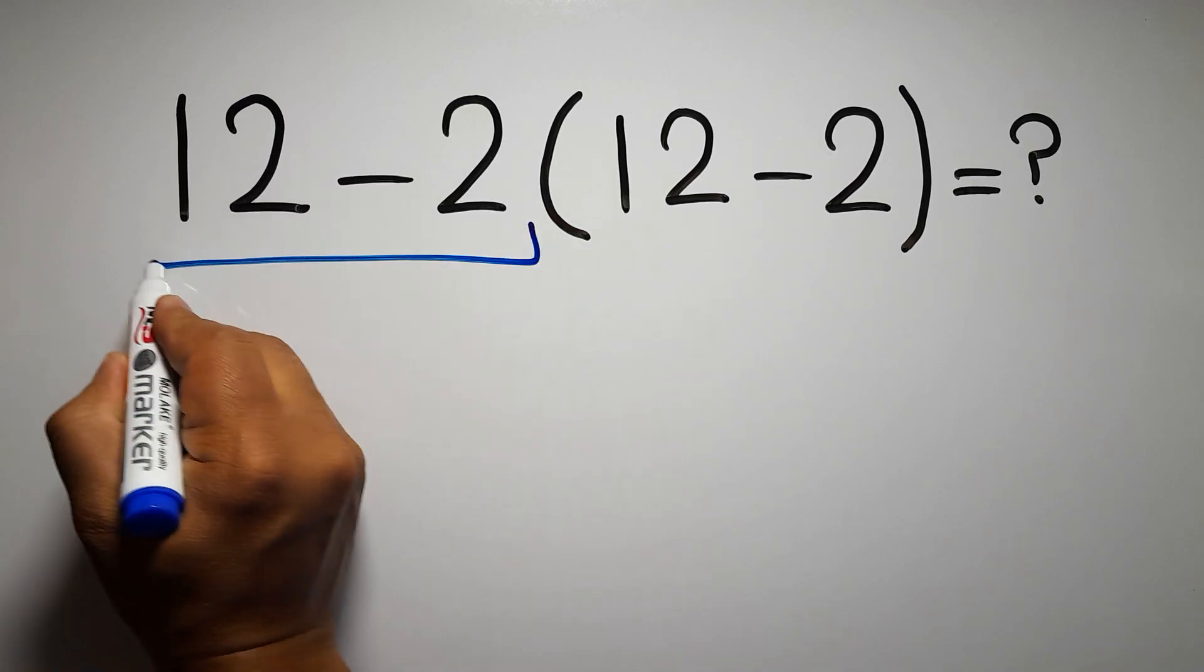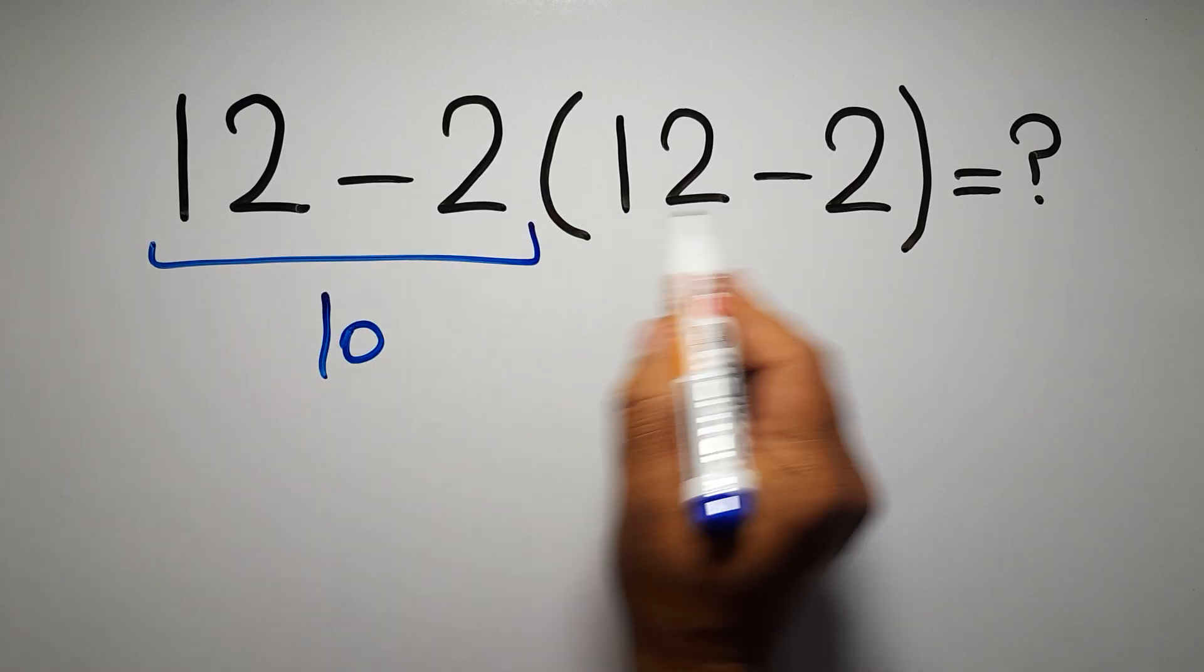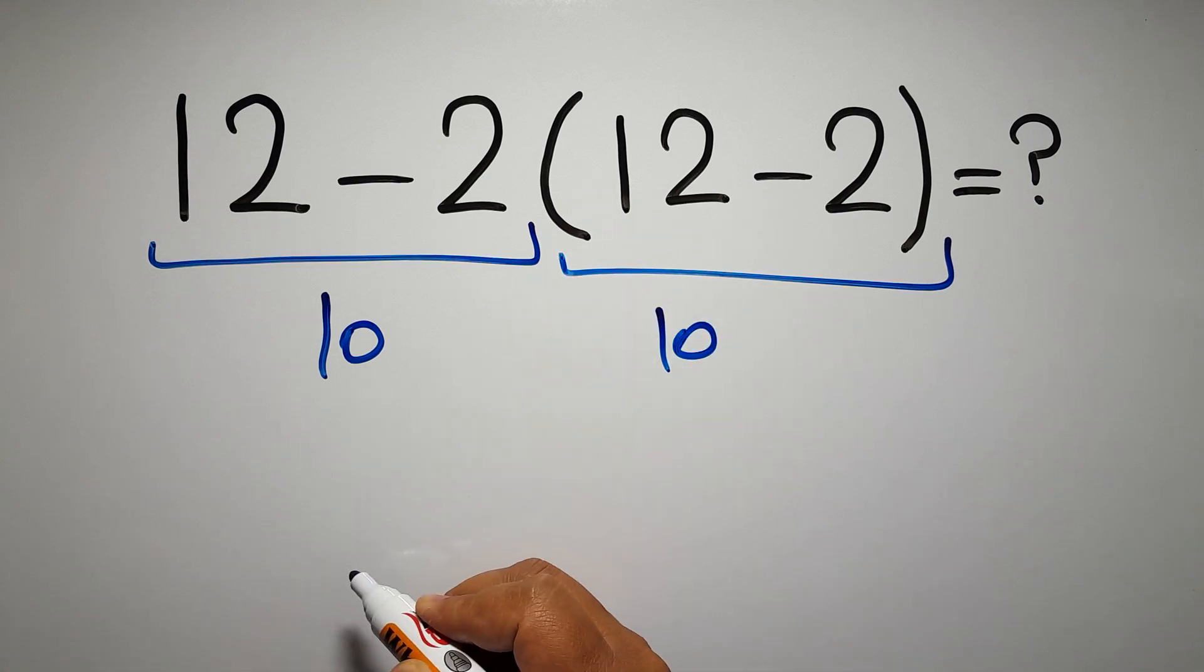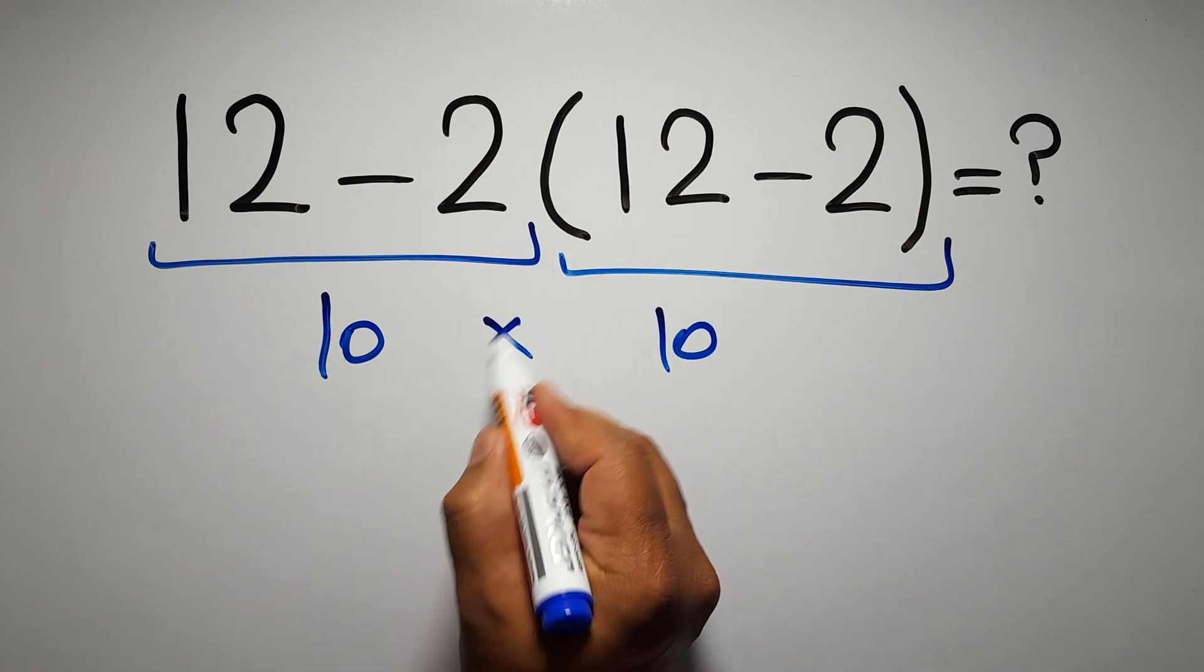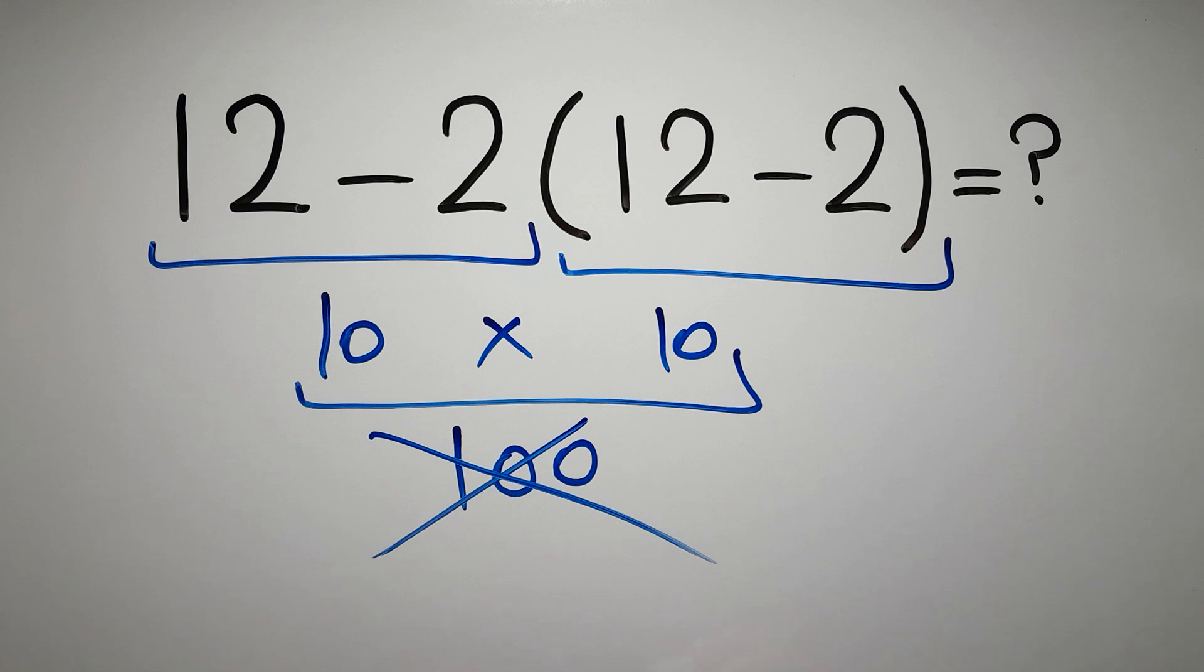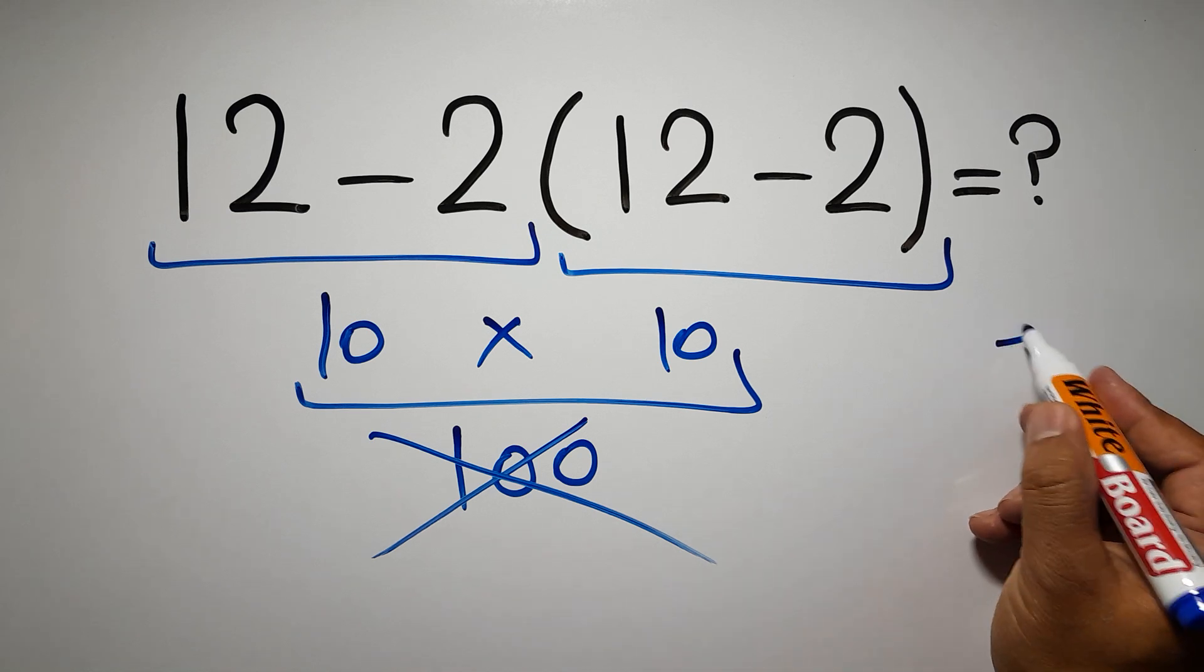12 minus 2 gives us 10, and again here we have 12 minus 2, so 10 times 10 is just 100. But this answer is not correct because according to the order of operations, first we have to do parentheses.